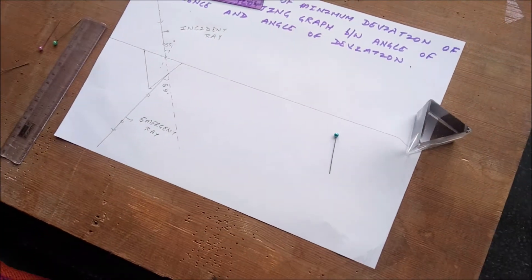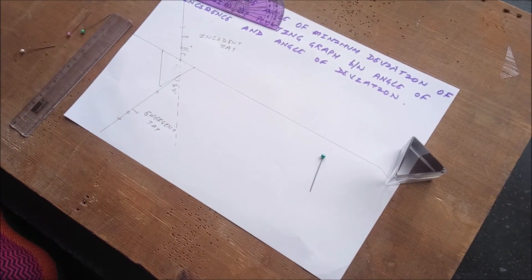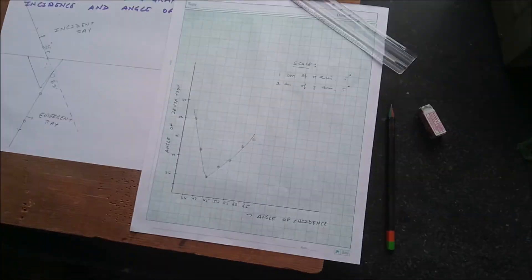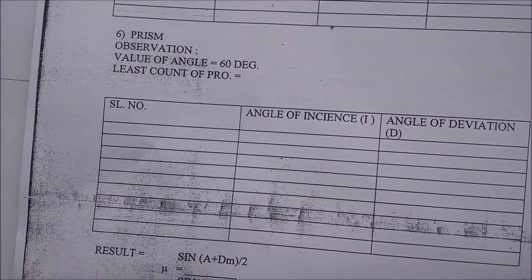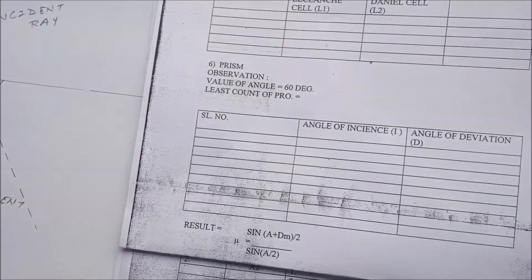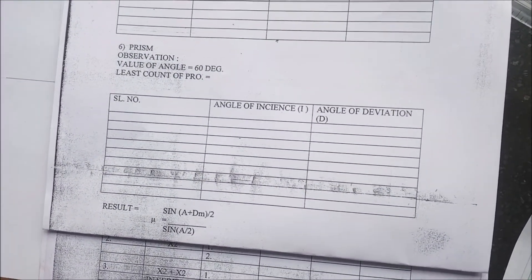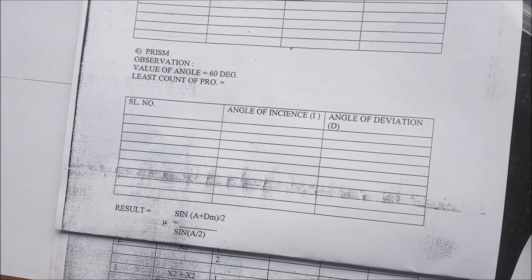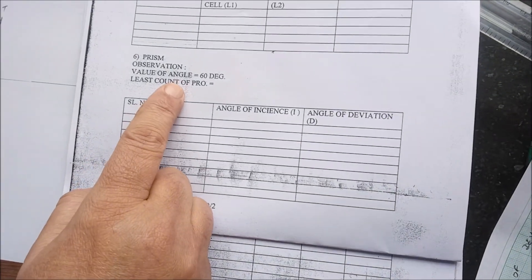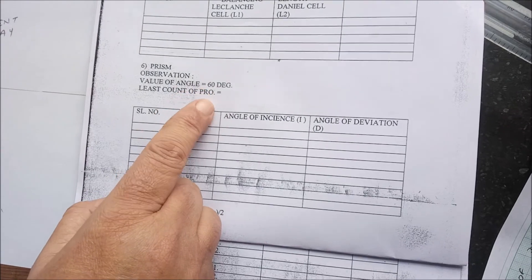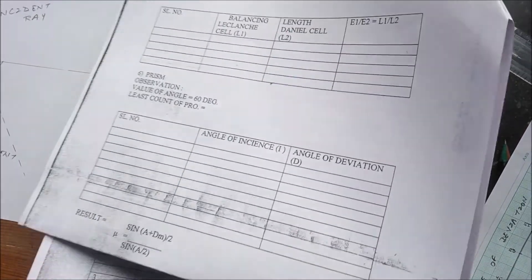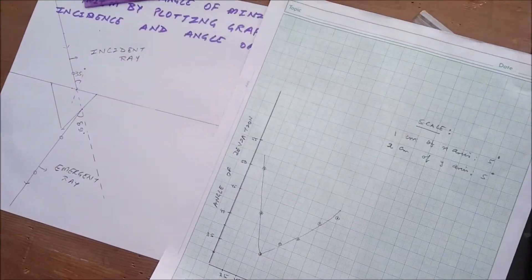Like this, you will change the angle of incidence and plot the graph. You have taken 35 degrees as the first observation, and you need to take 6 to 7 observations in intervals of 5 degrees: 35, 40, 45, 50, 55, and 60. Note that the value of the angle of prism is 60 degrees and the least count of the protractor is 1 degree.